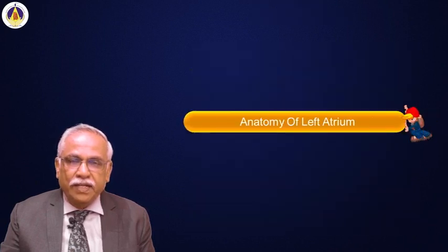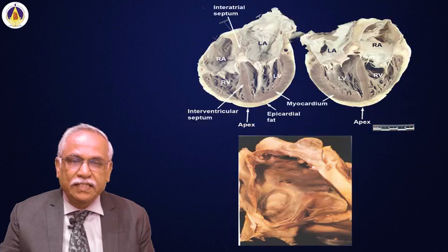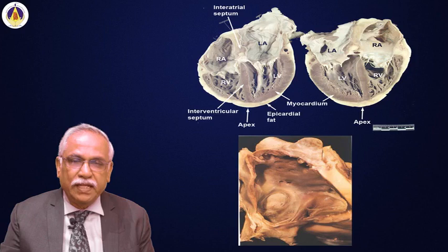The anatomy of the left atrium can be studied in the cut section of the heart. Both the atria are situated superior to the ventricles. The left atrium is slightly posterior and superior to the right atrium, which is situated a little anterior and inferior.